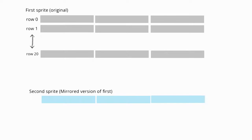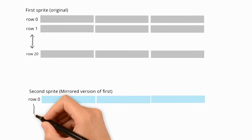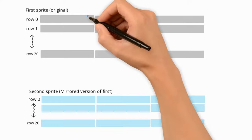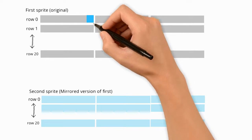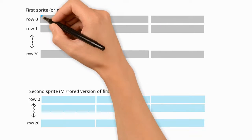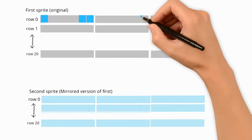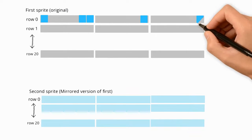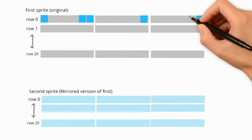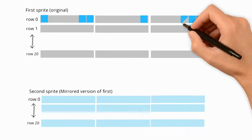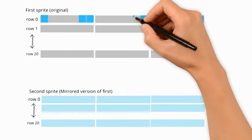We represent the sprite using the blocks on the screen. Each sprite contains 21 lines of 3 bytes. We just put some blocks representing the bits here. So this is the first byte, then we have the second byte on the first row and the third byte. Once we have done that, we need some loop to walk through those memory bytes and manipulate the bits in it.